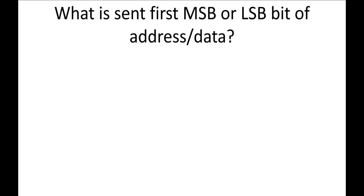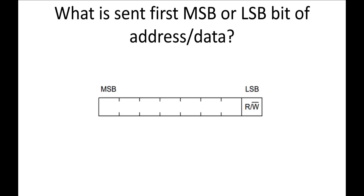Those who know the answer, please write it down in the comment section, otherwise I am going to reveal it. On the I2C bus, we first send the MSB bit, then the LSB bit. If it is an address, the MSB bit of the address is sent first, then the LSB bit. Similarly, if it is data, we first send the MSB bit of the byte, then we send the LSB bit.